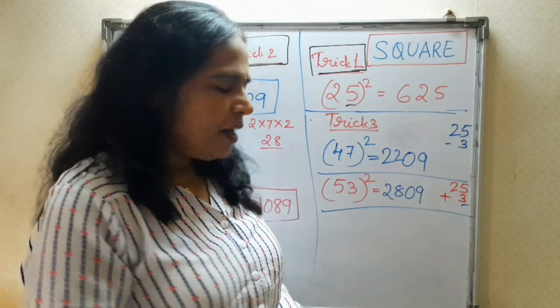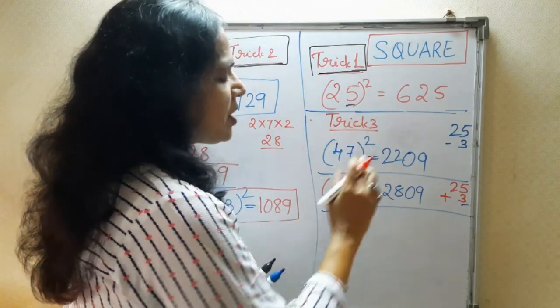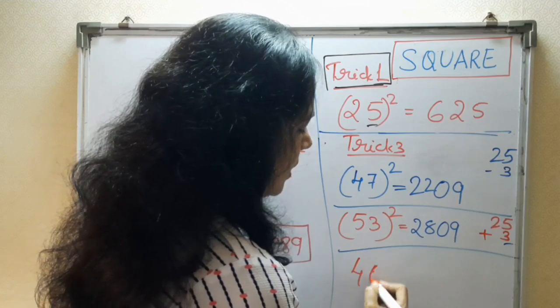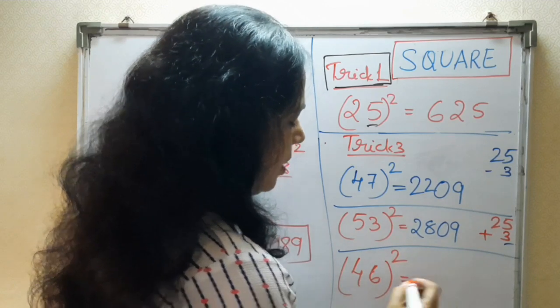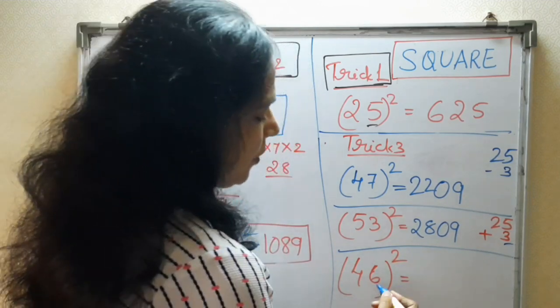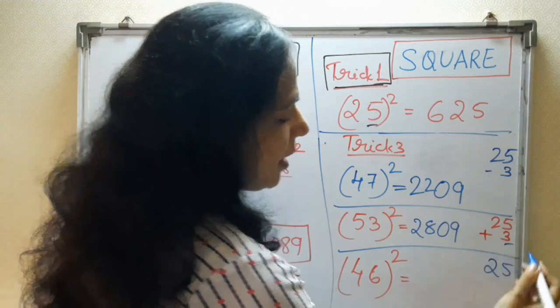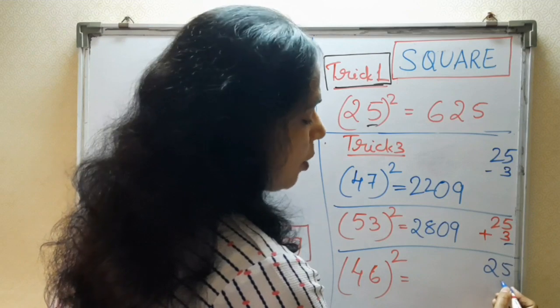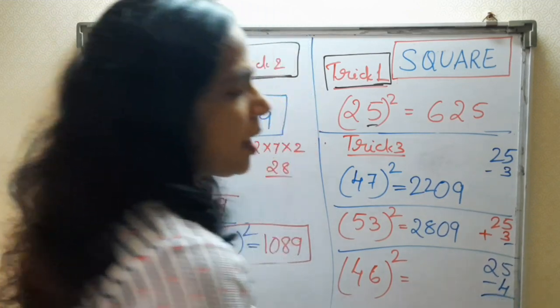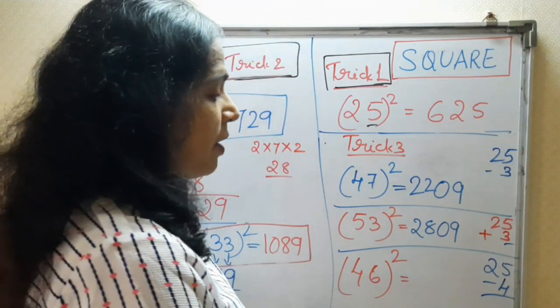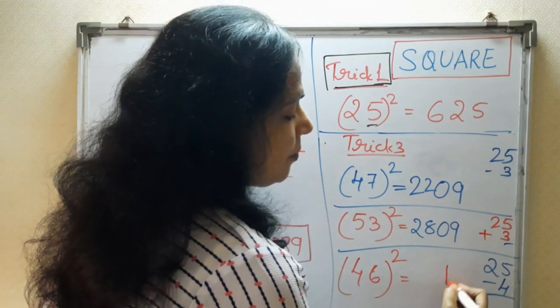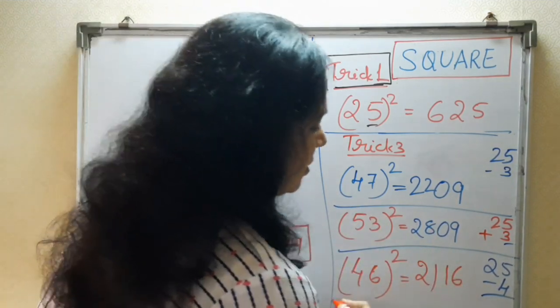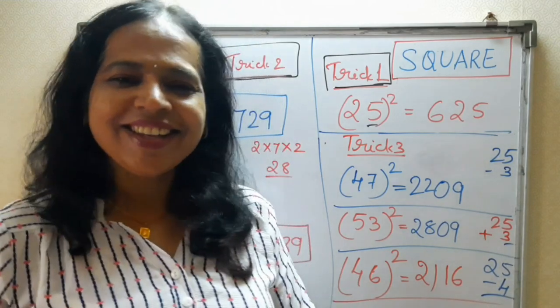If you are seeing any number which is near to 50, taking 46 square. So, 46 square, you will take first 25 aside. 46 is how much? 4 is less for 50. So, minus 4. Now, take the square of 4 is 16. Then, 25 minus 4 is 21. This is your answer. Isn't it so easy?